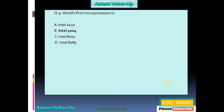The ninth question: The world's first microprocessor is which of the following? A: Intel 2020, B: Intel 4004, C: Intel 8000, D: Intel 8085. The correct one is Intel 4004, option B.